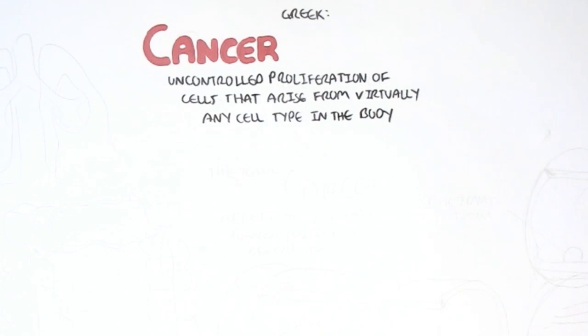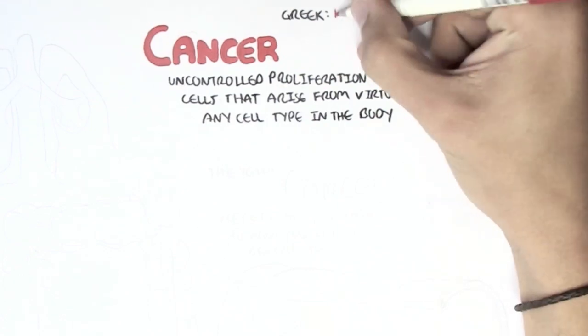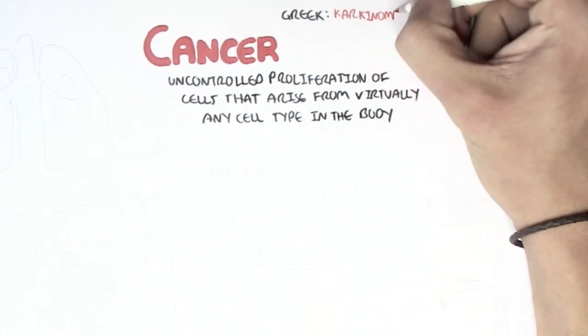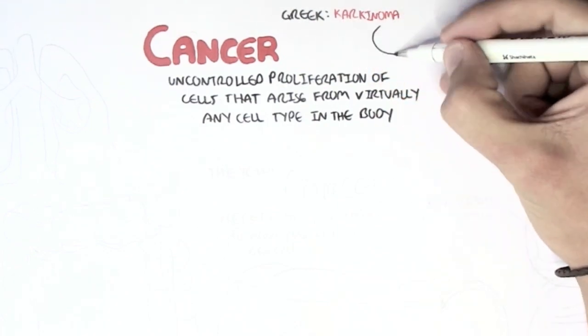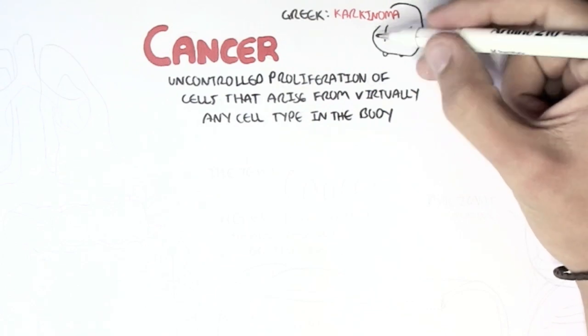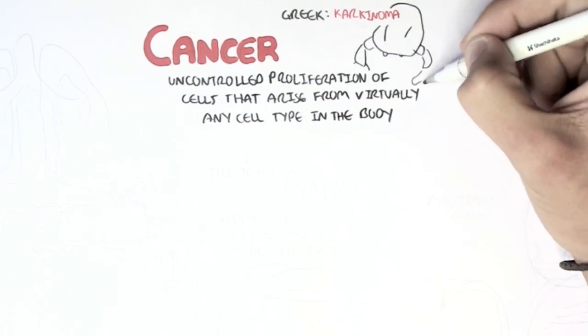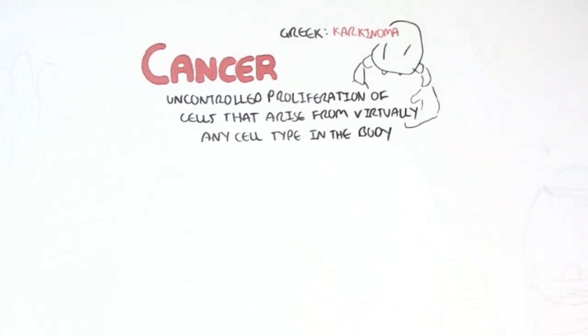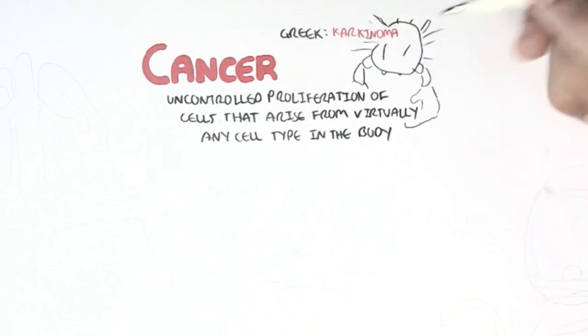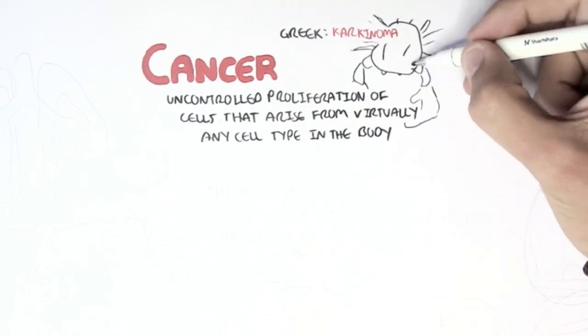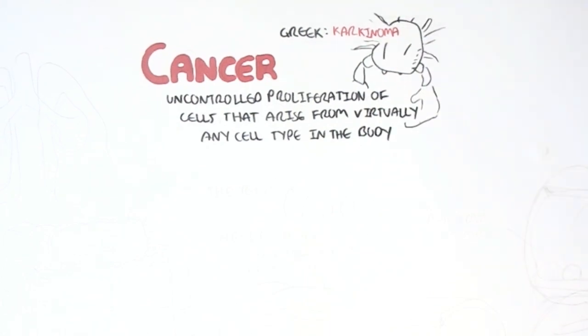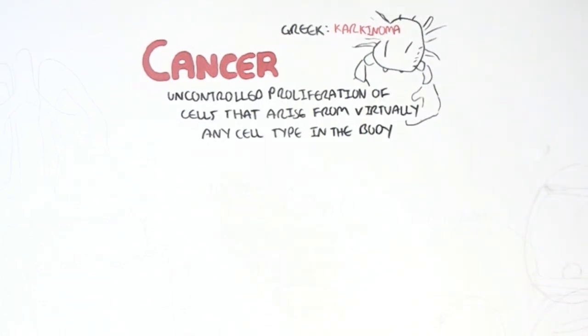The word cancer itself comes from the Greek word karkinoma, which means crab. Hence the horoscope stuff — the people who are born in cancer also have a crab symbol.